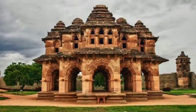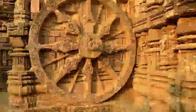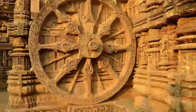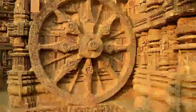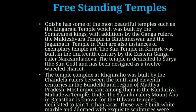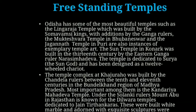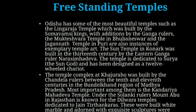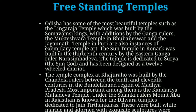The Sun temple at Konark was built in the 13th century by the Eastern Ganga ruler Narasimha Deva. The temple is dedicated to Surya, the sun god, and has been designed as a 12-wheeled chariot. The temple complex at Khajuraho was built by the Chandela rulers between the 10th and 11th centuries in the Bundelkhand region of Madhya Pradesh, the most important being the Kandariya Mahadeva temple. Under the Solanki rulers, Mount Abu in Rajasthan is known for the Dilwara temples, dedicated to Jain Tirthankaras, built in white marble and adorned with exquisite sculptures.